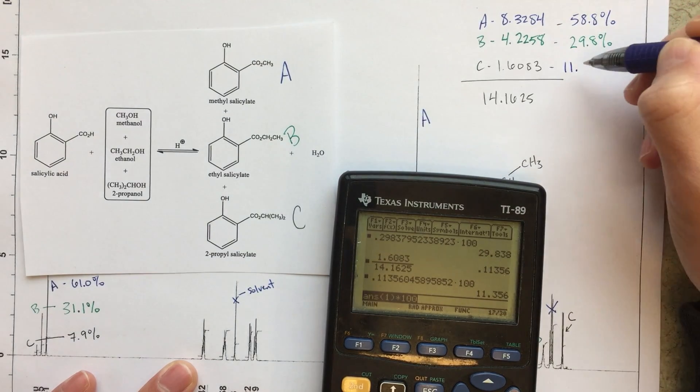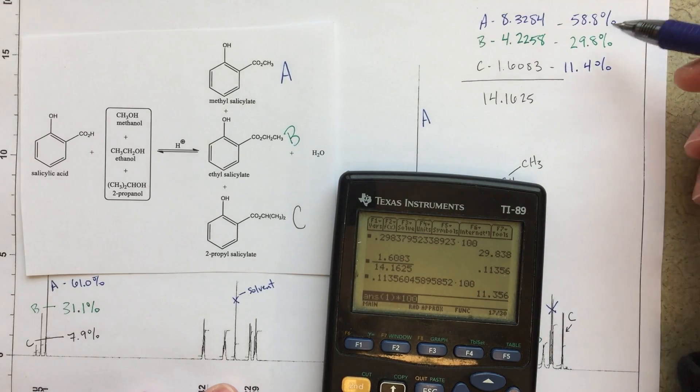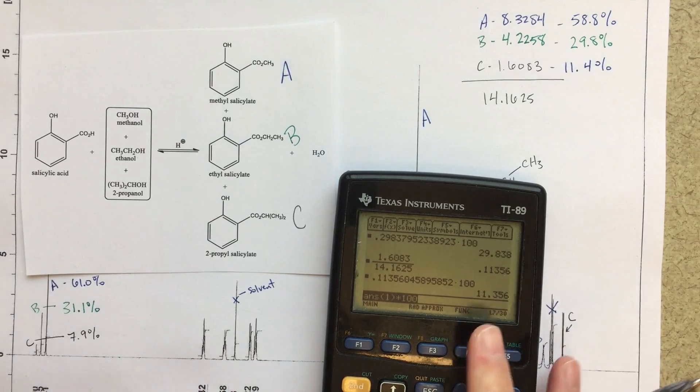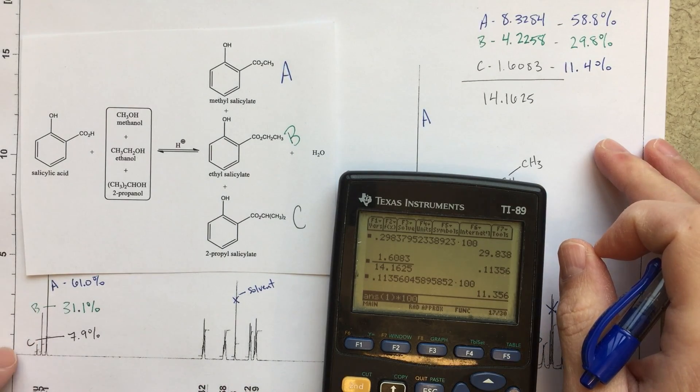And again, these should, oops, that should be in black. Oh, well. These should, again, add up to 100%. And they should be very similar to the numbers that we got over here. Now, you do see some differences, right?